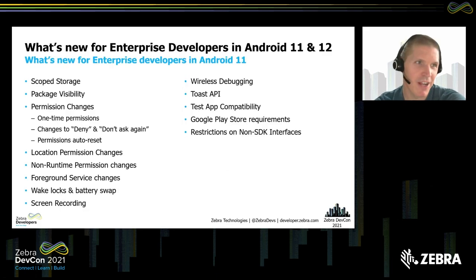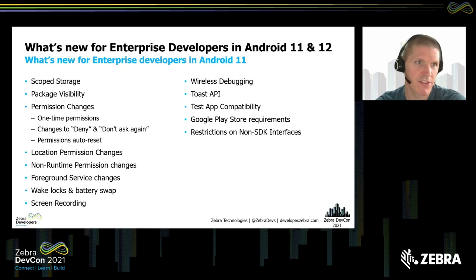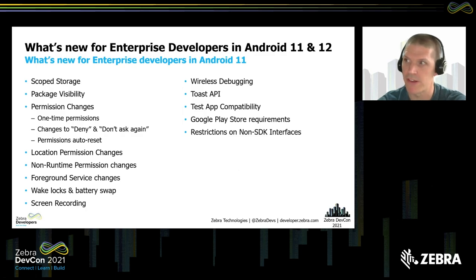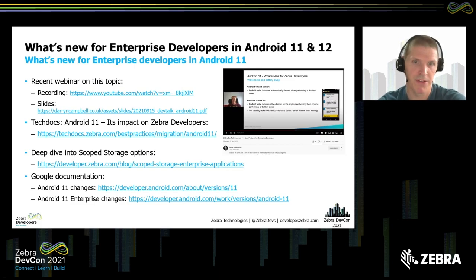In Android 11, there was a lot to be familiar with: scoped storage, package visibility, permission changes, and foreground service changes in terms of the flags that you can give to a foreground service. To save everyone a little bit of time, we did do a recent webinar on what's new for enterprise developers in terms of Google changes. It's currently on YouTube, the recording's up there, and the slides are available.